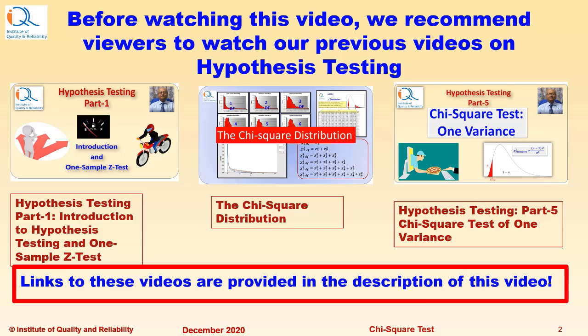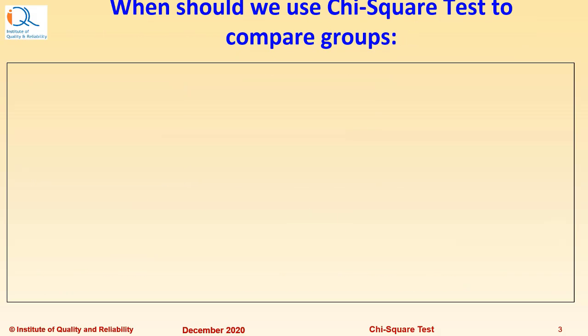Links to these videos are provided in the description of this video. When should we use the Chi-square Test to Compare Groups?